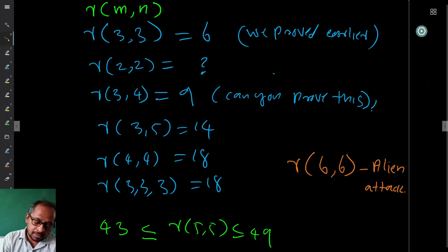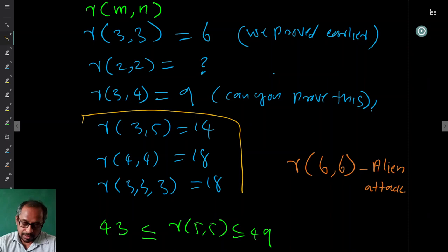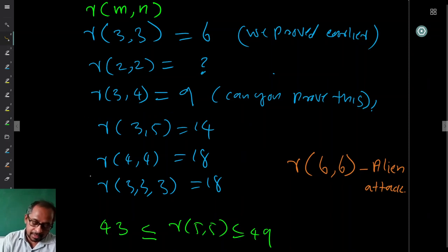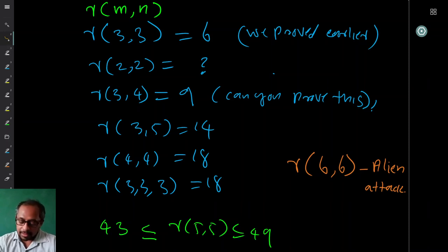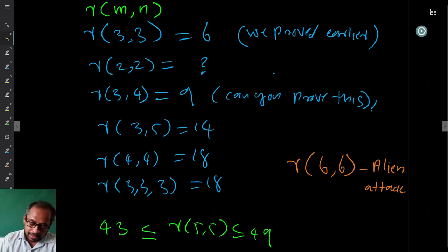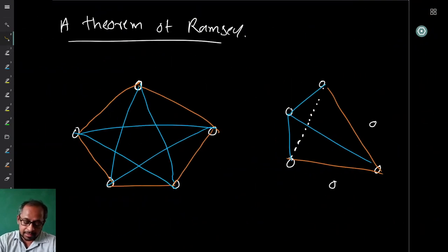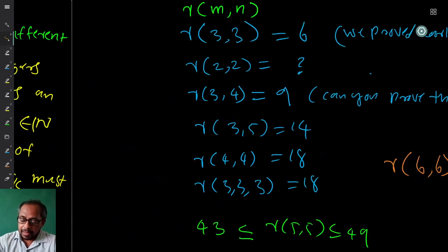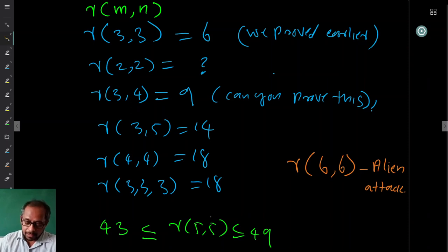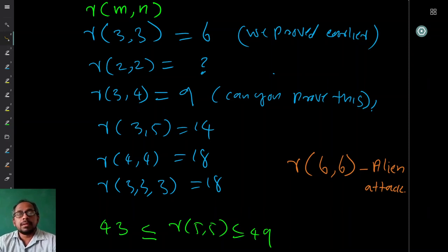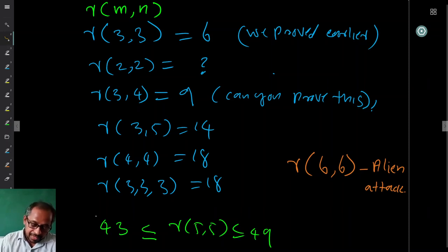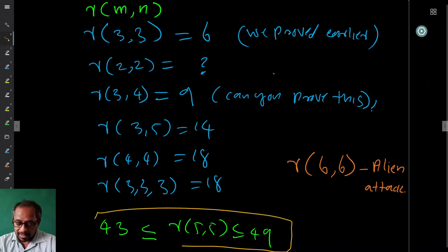R(3,3,3) uses three colors: show that with 18 or more vertices you must contain a monochromatic triangle. These small values are known. But R(5,5) — finding a monochromatic K₅ in a two-coloring — is much harder. We still don't know the exact value; what we know is that R(5,5) is between 43 and 49.